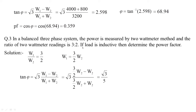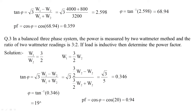Since W1 = (3W2)/2, the resulting tan φ = √3/5, which evaluates to approximately 0.346. The power angle is approximately 19-20 degrees, and cos of approximately 19-20 degrees gives a power factor of approximately 0.94. Note: if the load were capacitive, the problem is left as an exercise — please calculate and comment your answer.